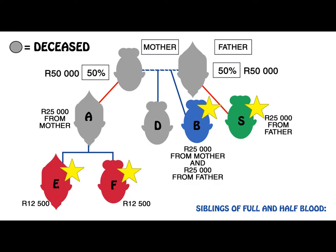In this scenario, D has both full and half-blood siblings. D's mother, father and half-blood brother A predeceased him. D is survived by his full-blood sister B, his half-blood sister F on his father's side, and E and F the children of the pre-deceased A. D's estate will be divided between his mother and father. His mother's share will be divided between her descendants — B as well as the children of A. B will therefore receive R20,000 from the mother, and E and F will receive R12,500 each. The father's portion will be divided amongst his descendants, B and S. Therefore, B will also receive R25,000 from the father and S will receive R25,000.